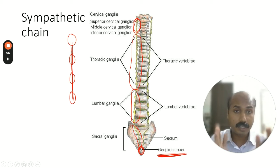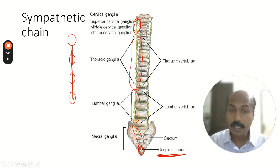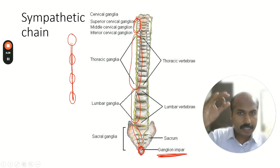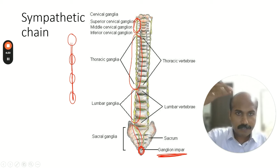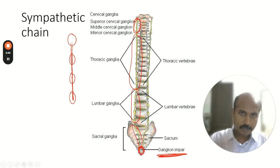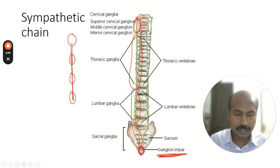Basically, the sympathetic chain is a chain of ganglia located on both sides of the vertebra. It is an essential component of the sympathetic system — it is through these ganglia that the sympathetic system operates. It is located from the base of the skull, from the highest cervical vertebra, all the way down to the lowest sacral vertebra, to the ganglion impar. That is the sympathetic chain.